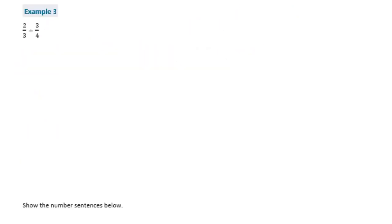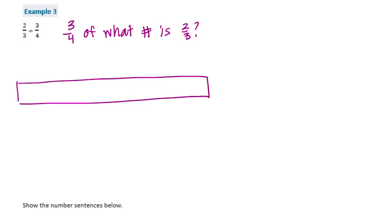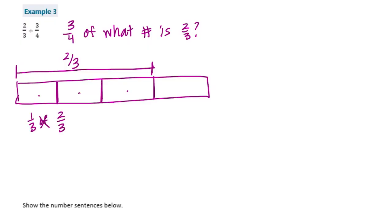Example 3: two-thirds divided by three-fourths, using the partitive interpretation. That means three-fourths of what number is two-thirds? We draw a model: three-fourths of a number equals two-thirds. We separate this into three equal pieces, finding one-third of two-thirds, which is one-third times two-thirds, equaling two-ninths. Each section is two-ninths, and the fourth section is also two-ninths. Two-ninths times four equals eight-ninths.